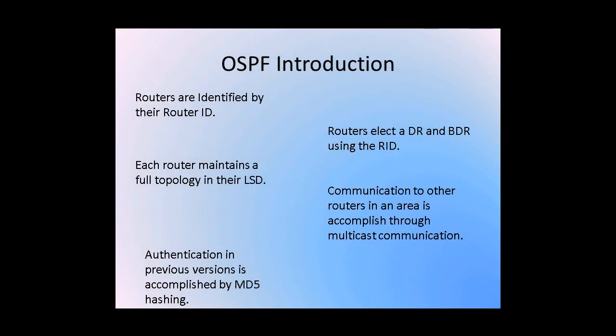As an introduction to the topic, I would like to begin by reviewing some of the OSPF basics. In OSPF, routers are identified by their router ID. A router ID is either determined by the highest up-up loopback interface or IPv4 interface, or is determined by setting the router ID explicitly. Routers elect a designated router and a backup designated router using their router ID. Each router maintains a full topology in their link state database. Communication to other routers in an area is accomplished through multicast communication. Authentication in previous versions is accomplished by using MD5 hashing using a shared secret.